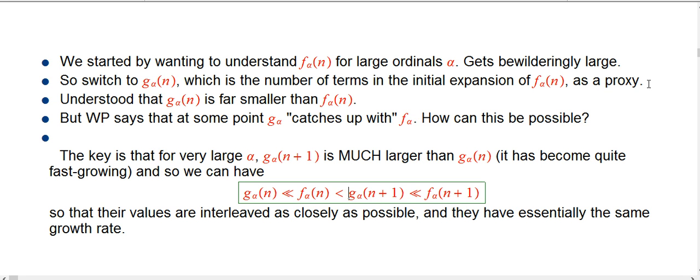So this is really what that means. It means that their values are interleaved as closely as possible. You're never going to get that g_α(n) is bigger than f_α(n) of the same n. But you can have that you just increase that input by 1, and the g_α leapfrogs over the previous value of f_α. And so they'll actually kind of alternate. This whole sequence goes on, n, n+2, n+1, n+2, n+3, etc.